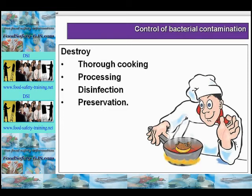We also need to look at preventing the multiplication of bacteria. We need to store food out of the temperature danger zone — therefore below 5°C or above 63°C — to prevent multiplication. We can also prevent multiplication by fermentation of the product, for example salami, yoghurt and cheese, by the use of preservatives such as salt, sugar or acid, and lastly by keeping dry foods free from moisture.